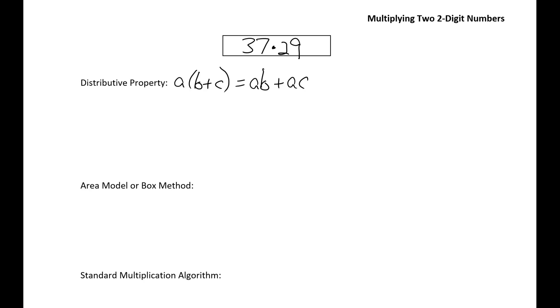So if we use the distributive property to write 37 times 29, the part on the left side of the equals sign might look like this: 37 times 20 plus 9. Which means I'm going to multiply the 37 times the 20, and I'm also going to multiply the 37 times the 9.